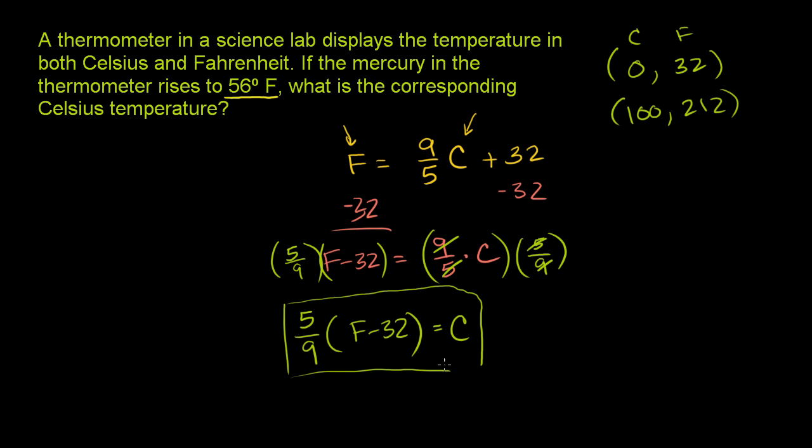Now that we've actually gotten this far, let's just put in 56 degrees for the Fahrenheit temperature and figure out what the Celsius temperature is. So if we put 56 in there, we're going to have 5/9 times (56 minus 32) equals the Celsius temperature.